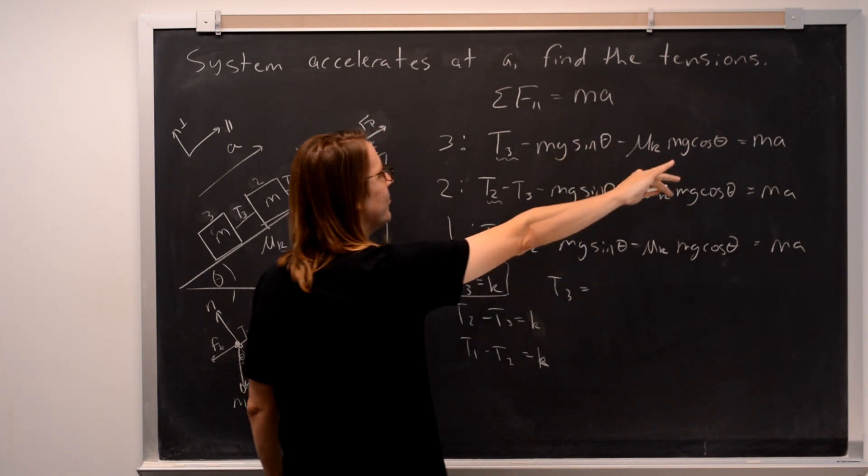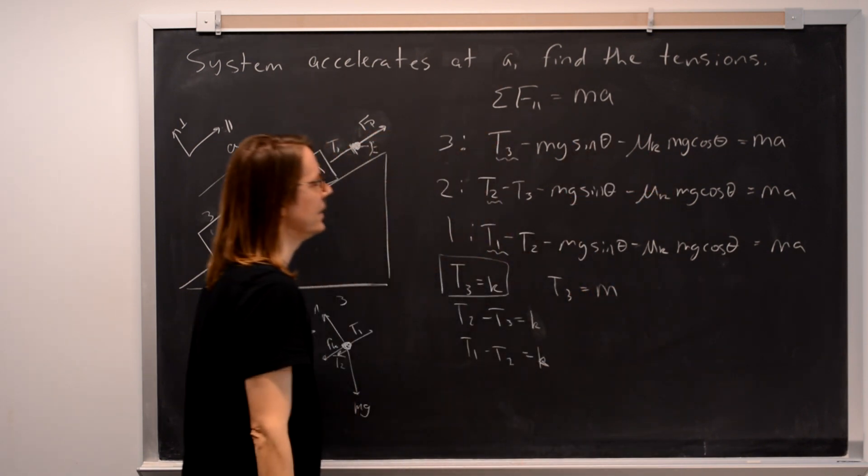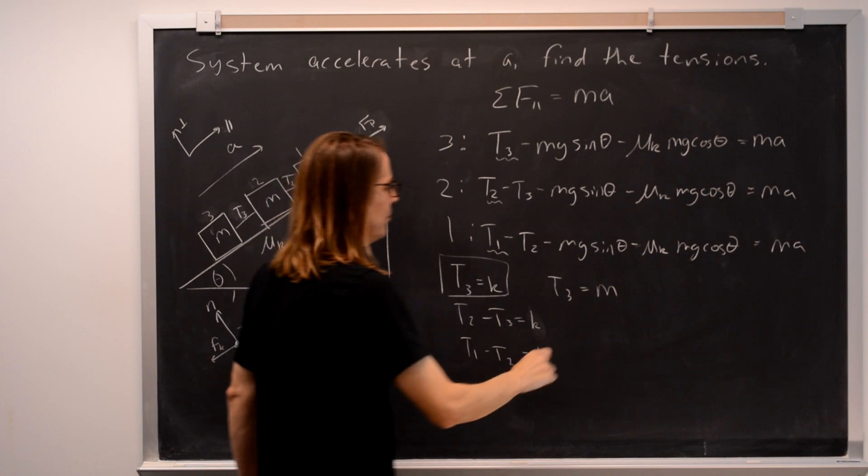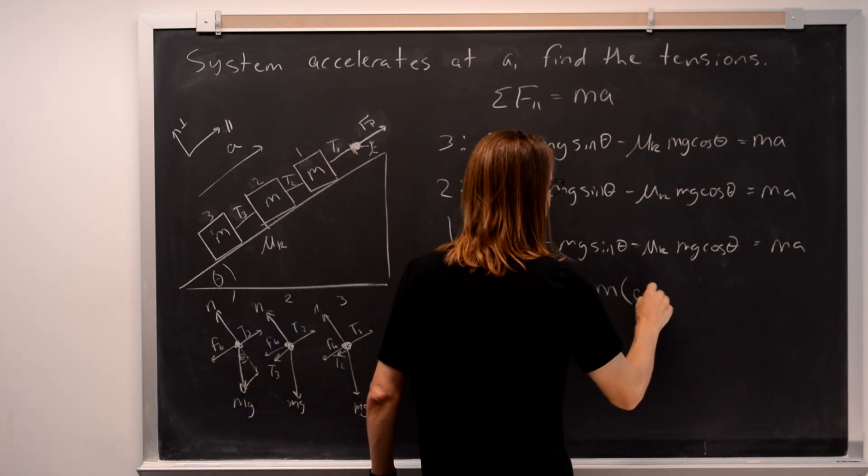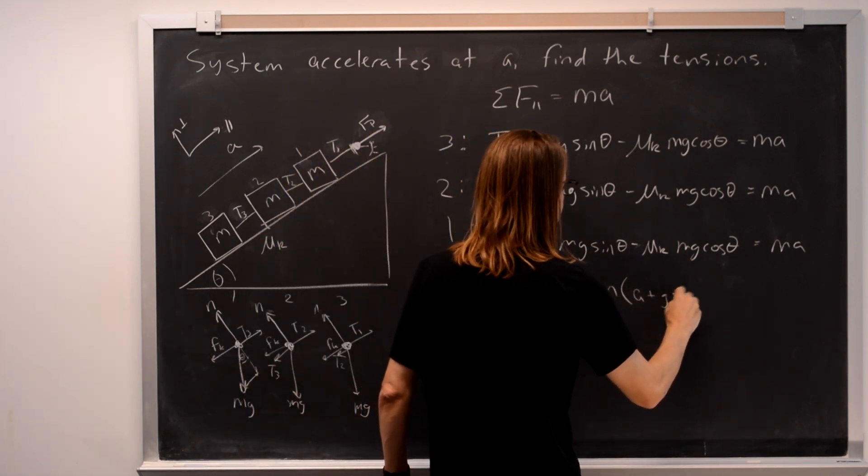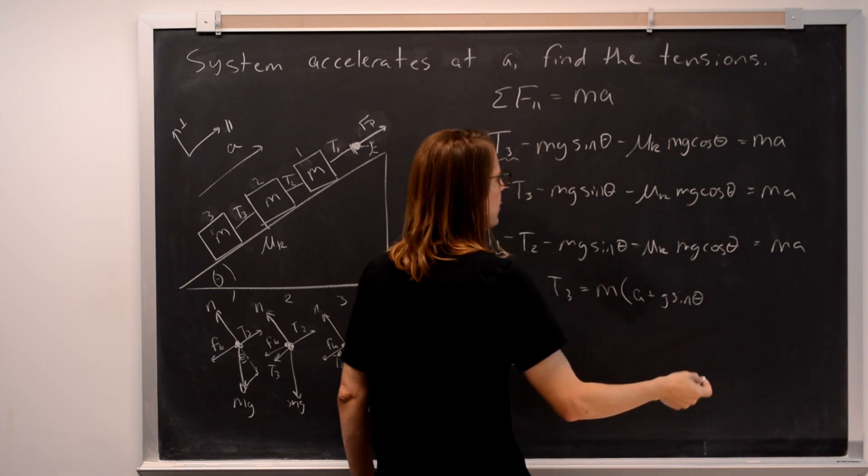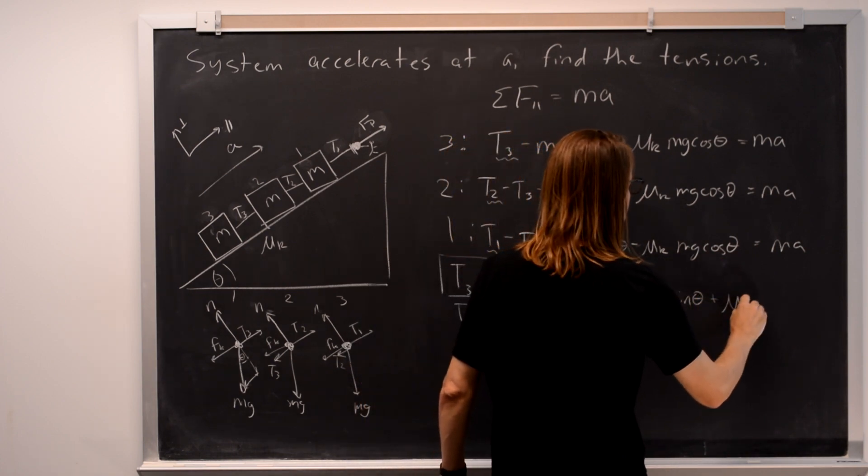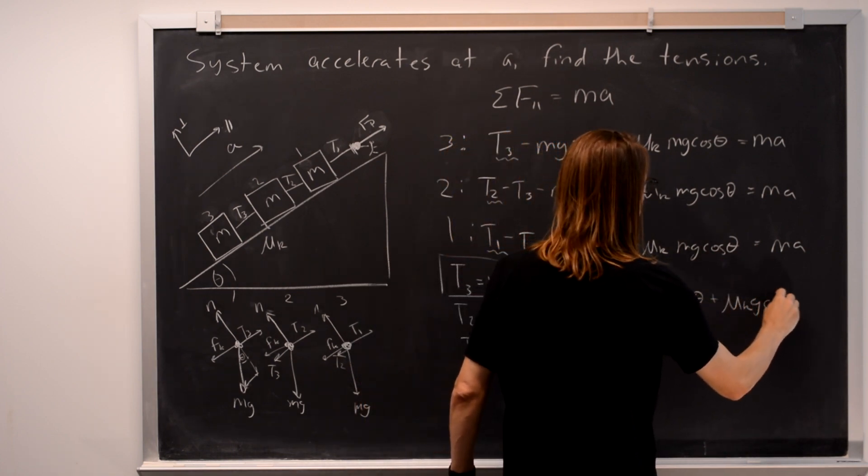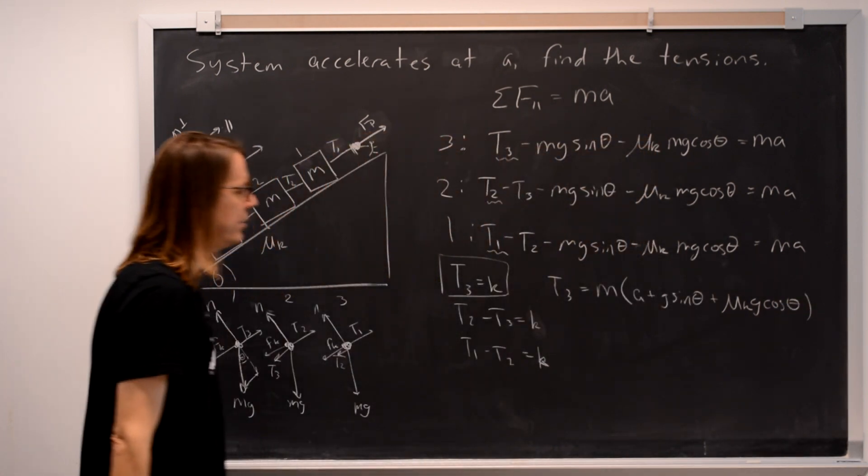In terms of the symbolic answer, T3, let's simplify it a little bit. We could pull out an m. I guess that's all we can simplify. It's going to be equal to mass times the acceleration you were given plus g sine theta, which you're all given, plus mu k g cosine theta. So there's T3.